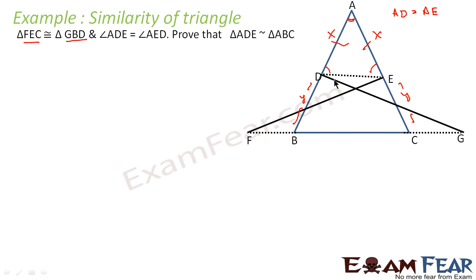But that is difficult to prove directly. For that, we need to prove that DE is parallel to BC. An easier approach: if we can prove that the sides are proportional — that is, AD by AB is equal to AE by AC — and we can see they are proportional because AD is X, AB is X plus Y. So X by (X plus Y) equals AE by AC, which is also X by (X plus Y). That means from SAS, we can prove they are similar.